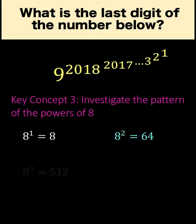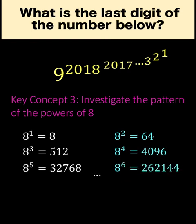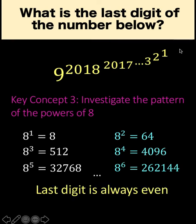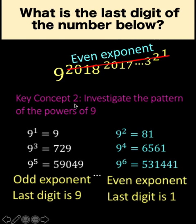8 to the first is 8, 8 to the second is 64, 8 to the third is 512, and so on and so forth. No matter what the exponents are, when 8 is raised to any exponent, the resulting numbers are all even: 8, 64, 512, 4096, and so on. So we now know that this exponent is an even number. We now have 9 raised to an even exponent. Going back to our second step, when the exponent is even, the last digit when 9 is raised to that exponent is equal to 1.